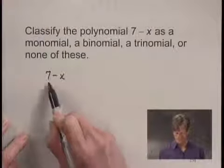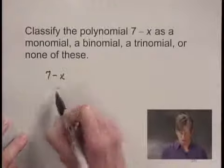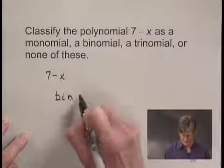The polynomial that we're looking at, 7 minus x, has exactly two terms, so that tells us that it is a binomial.